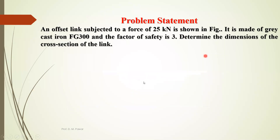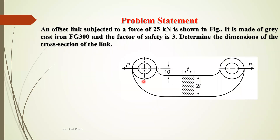Now let us look at the second numerical, also an eccentric loading problem. An offset link is subjected to a force of 25 kN as shown in the figure. It is made of gray cast iron FG300, where 300 is the SUT (ultimate tensile strength) value. The factor of safety is 3. The cross section has thickness T and width 2T, and we must determine the dimension T.